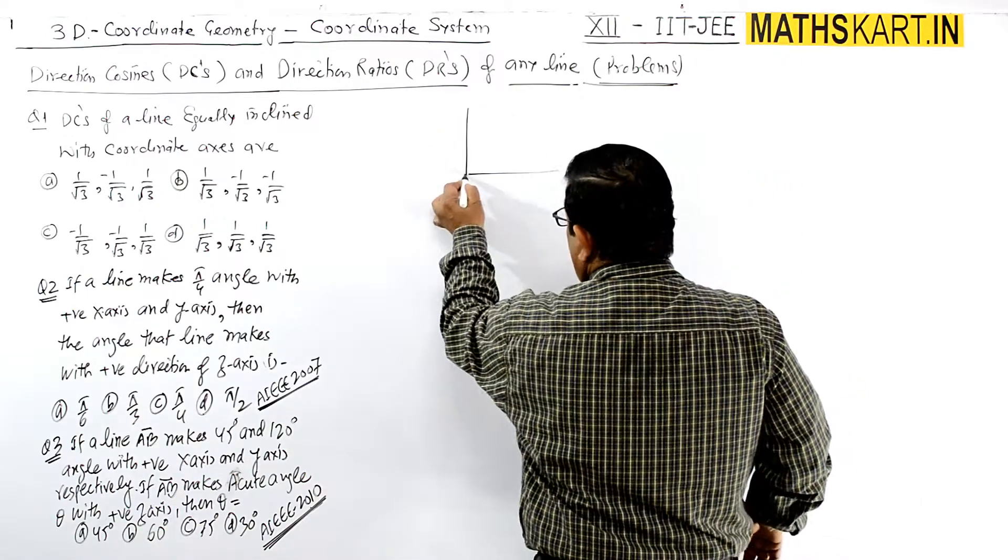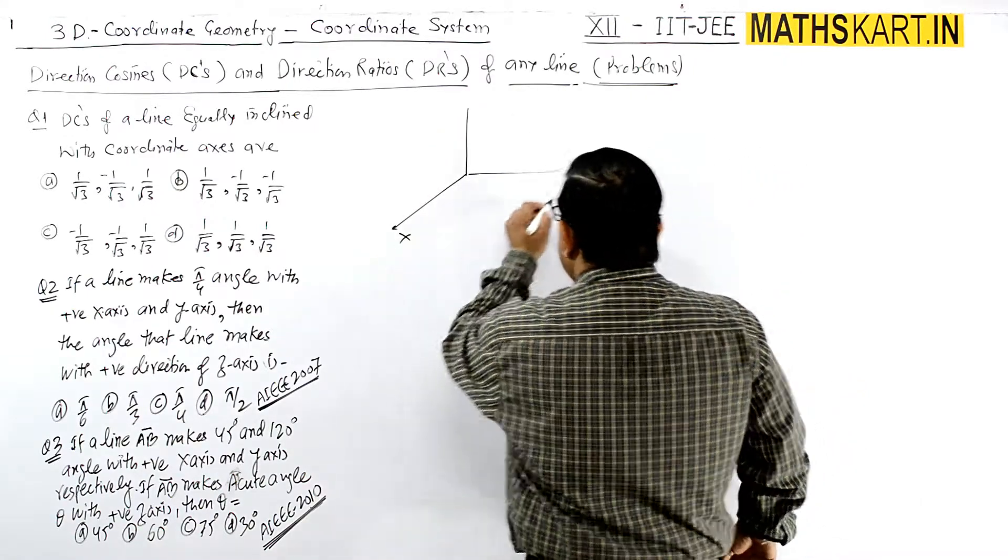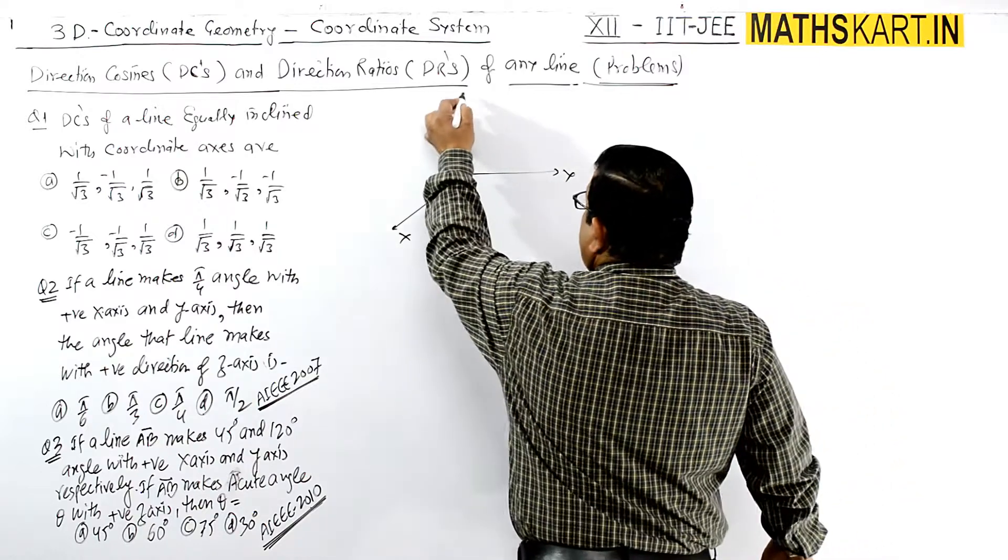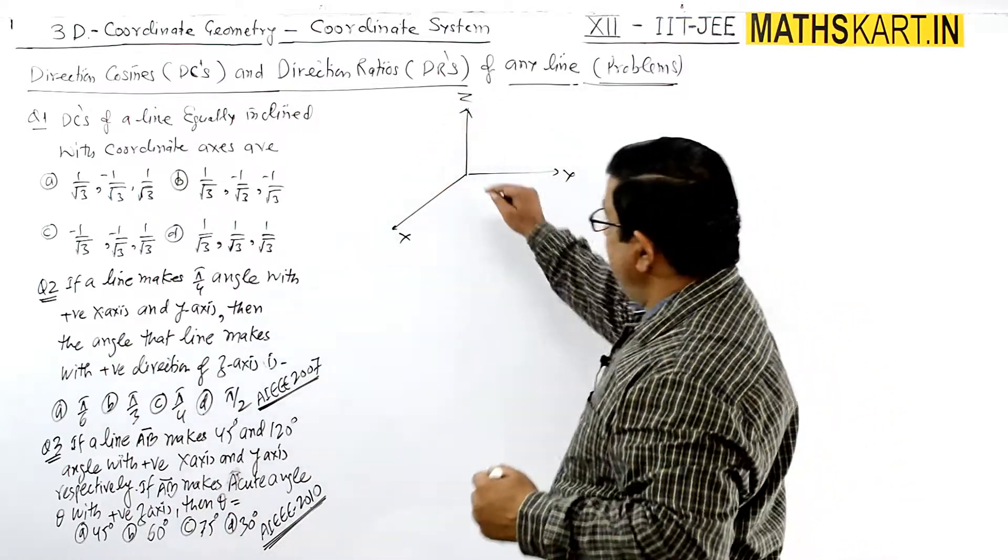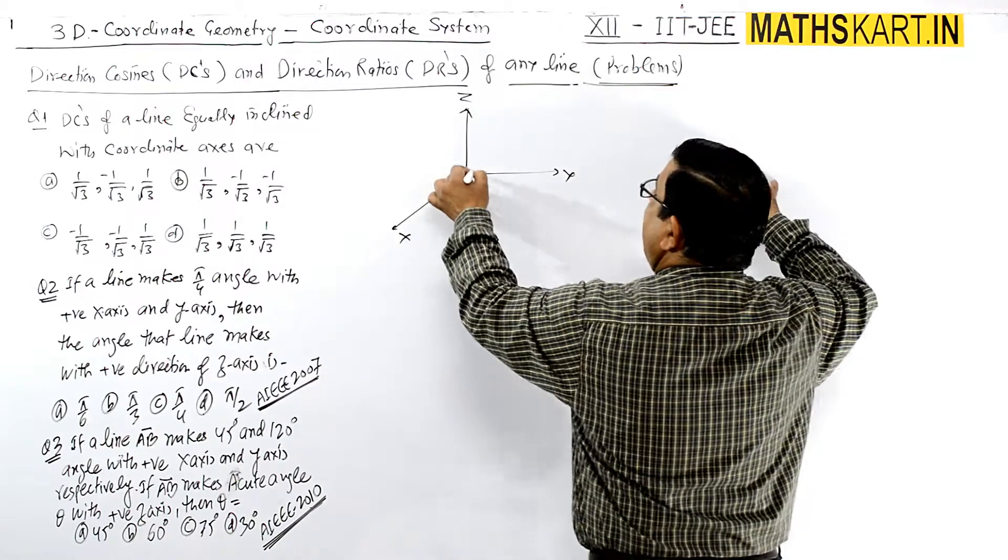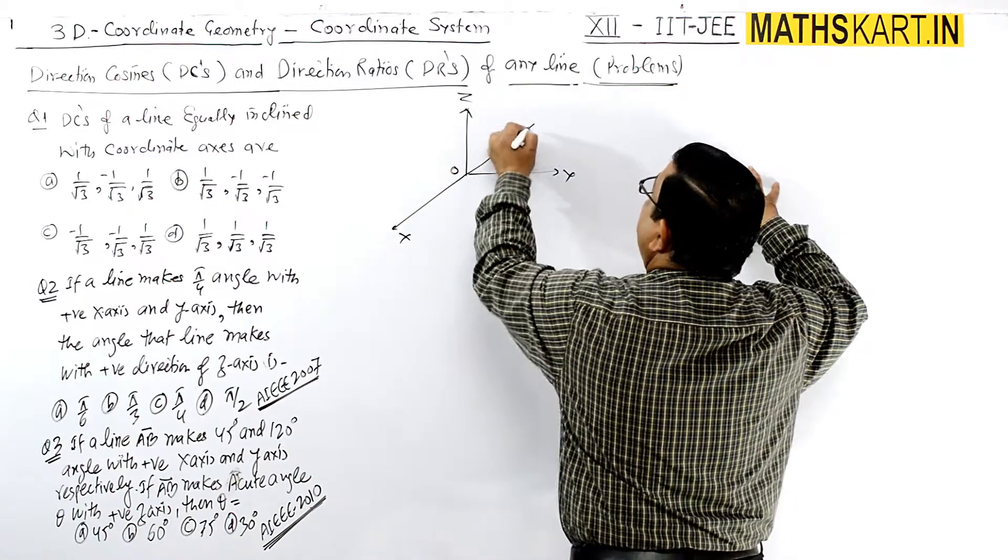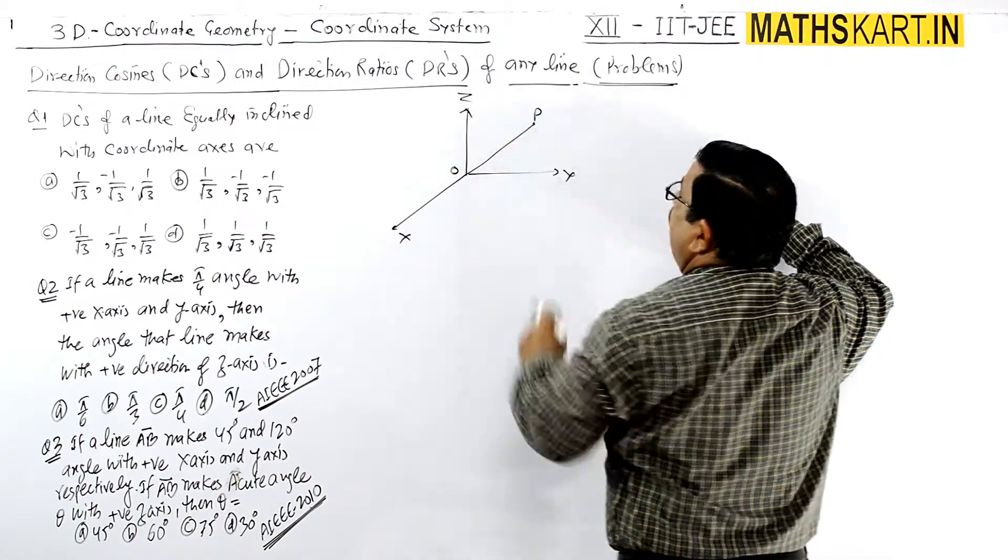A line equally inclined with the x-axis, y-axis, and z-axis is possible. Let's say this is the line, so it is making all the angles equal.